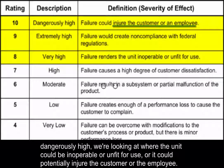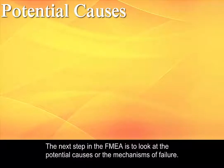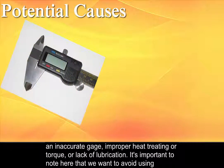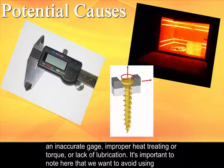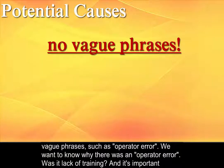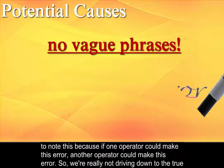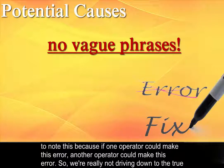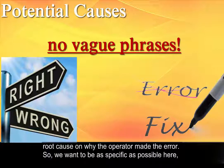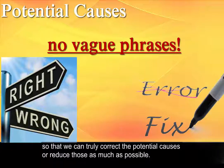The next step in the FMEA is to look at the potential causes or the mechanisms of failure — what could cause this failure to happen. Examples include an inaccurate gauge, improper heat treating or torque, or lack of lubrication. It's important to avoid using vague phrases such as operator error. We want to know why there was an operator error — was it lack of training? If one operator could make this error, another operator could make this error, so we're not driving down to the true root cause. We want to be as specific as possible so that we can truly correct the potential causes or reduce them as much as possible.